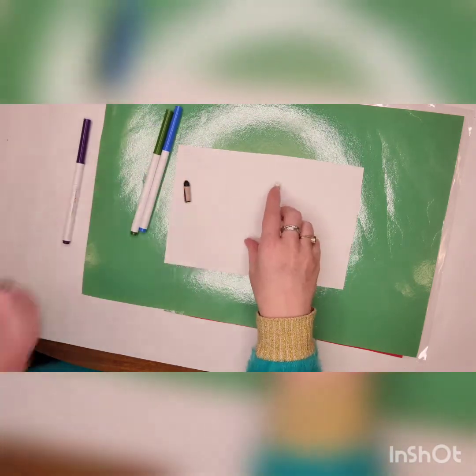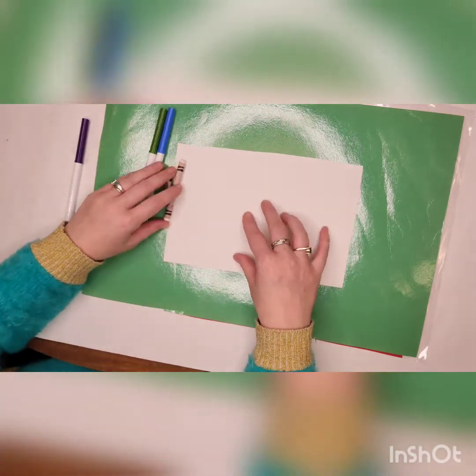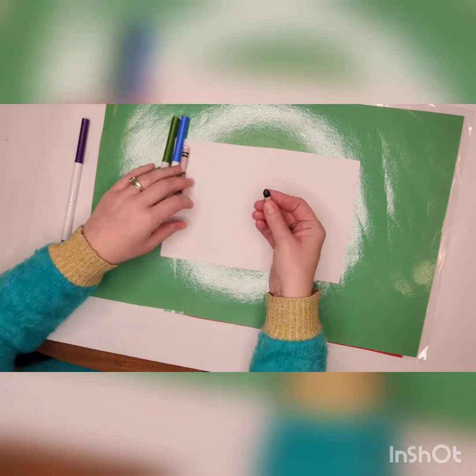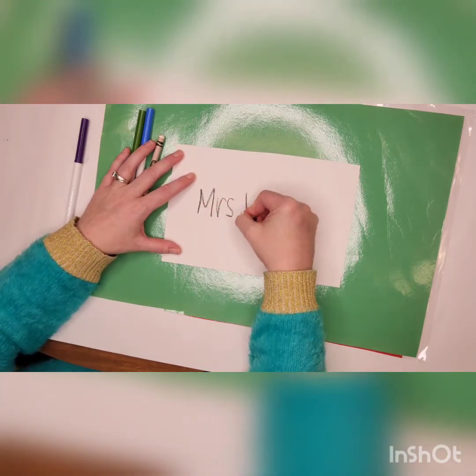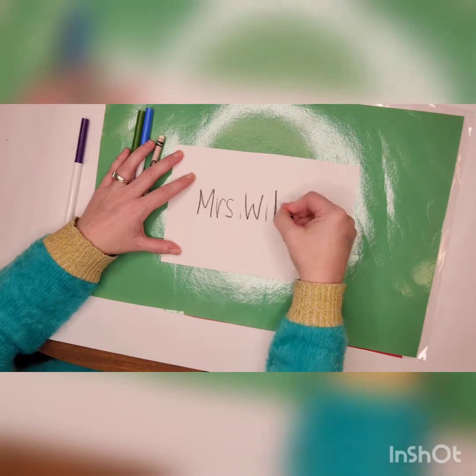So let me show you what we're going to do. First off, we are going to, on the back of our paper, use our black crayon and write our name and then flip it over.